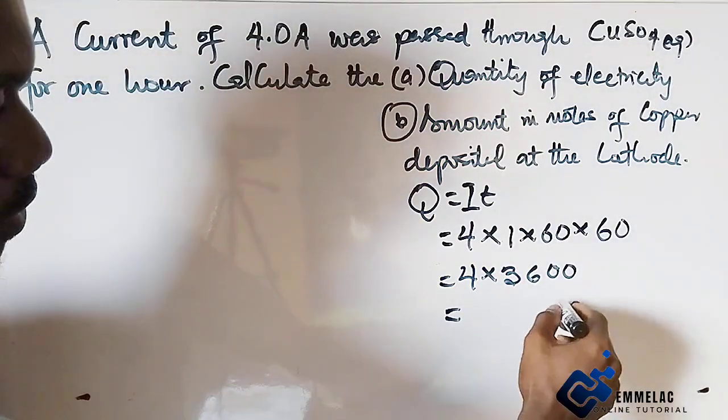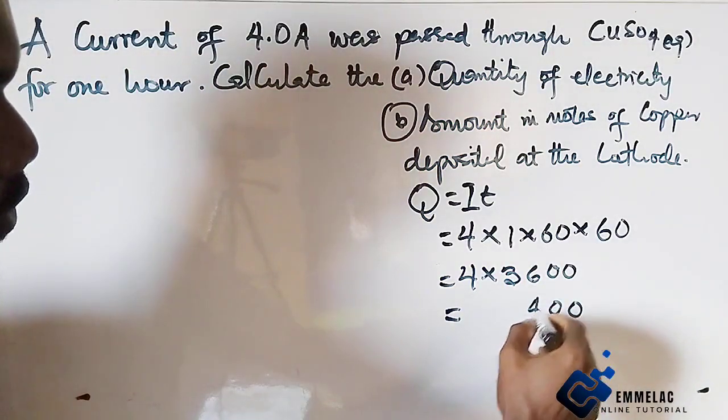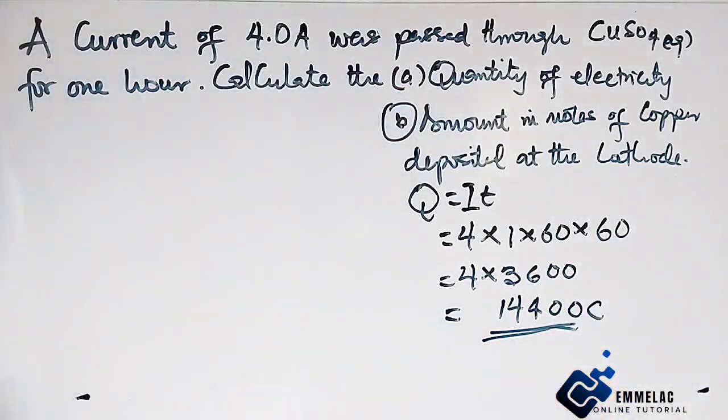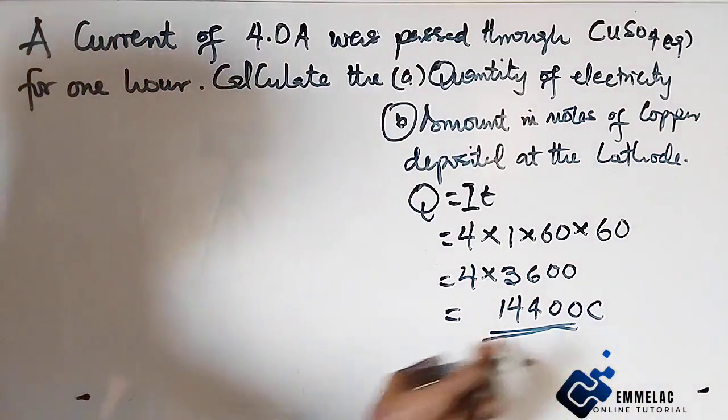this is 14,400 coulombs. So this is the quantity of electricity.